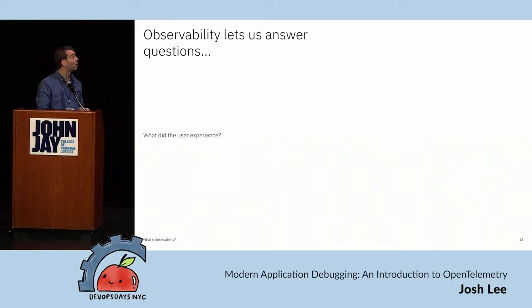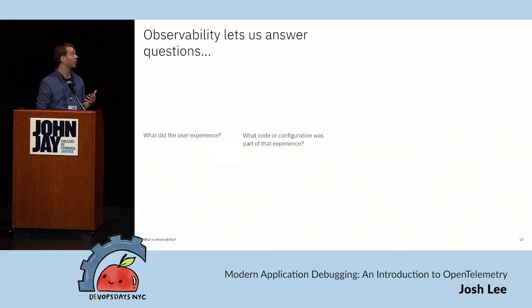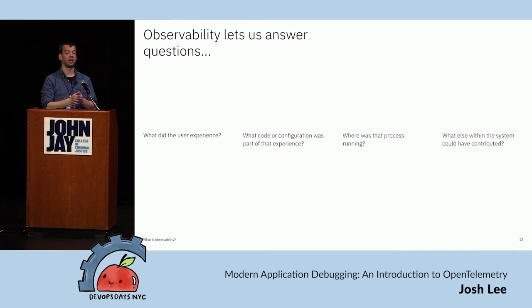When I talk about observability today, I really just mean: can we understand what we're looking at? Can we look at something and understand why it's doing what it's doing? That lets us answer questions like: what did the user experience, what was the latency of their experience, what error messages might they have seen? We're starting from a user-centric point of view, then tying back to what my team did, what I have responsibility for, and what infrastructure it's running on.